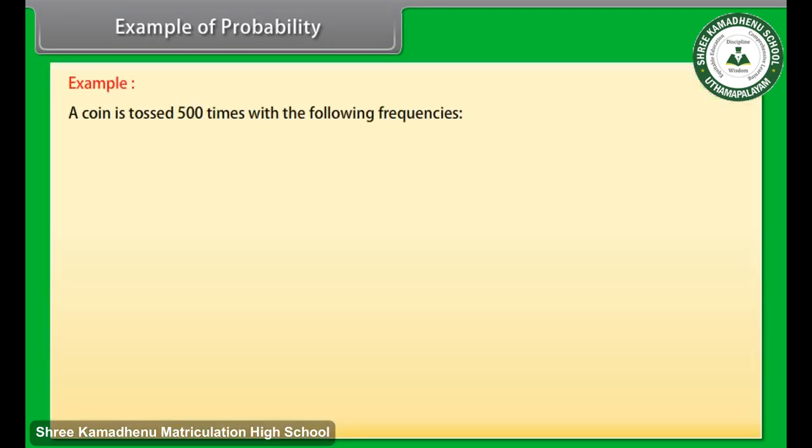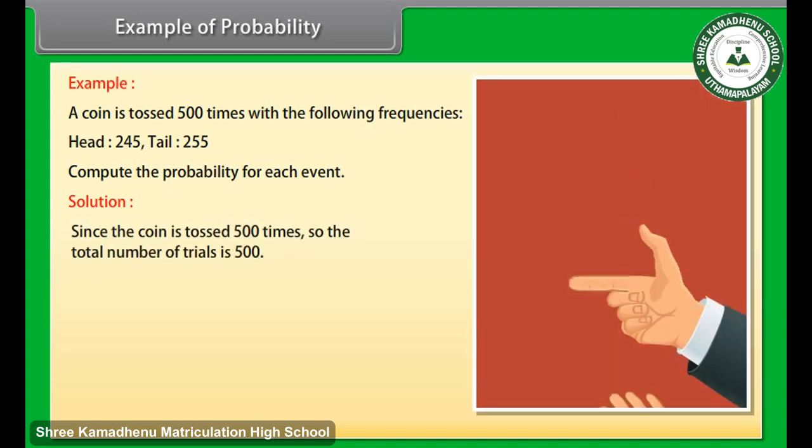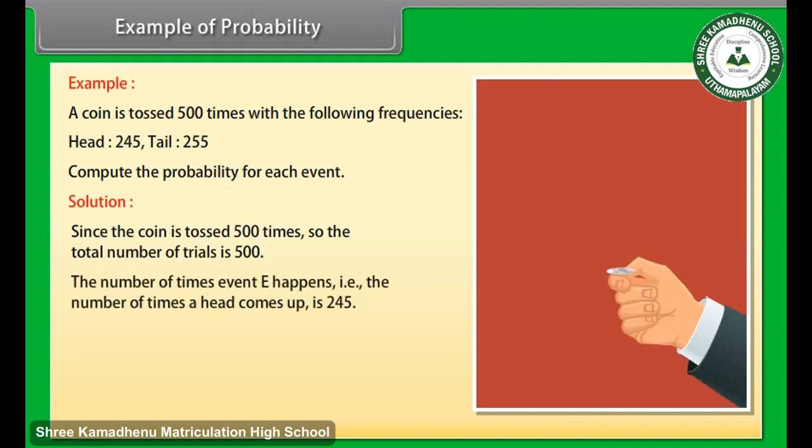Example of probability. Example: A coin is tossed 500 times with the following frequencies. Head: 245, Tail: 255. Compute the probability for each event. Solution: Since the coin is tossed 500 times, the total number of trials is 500.